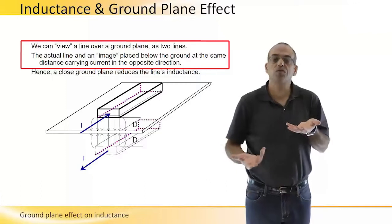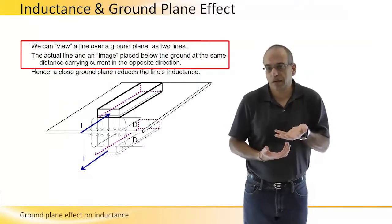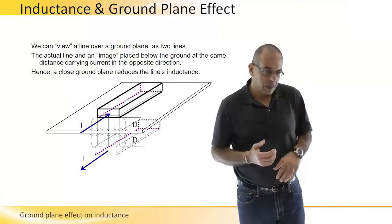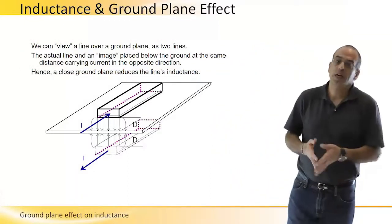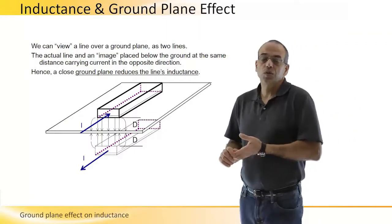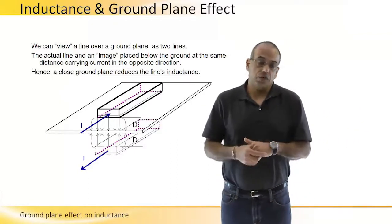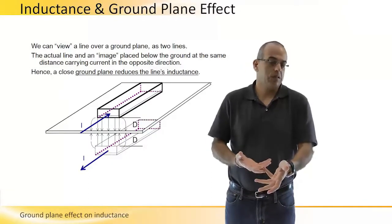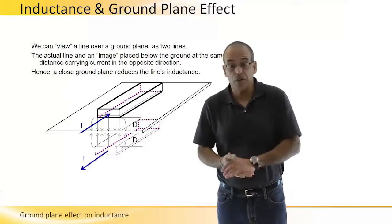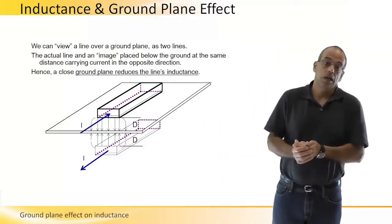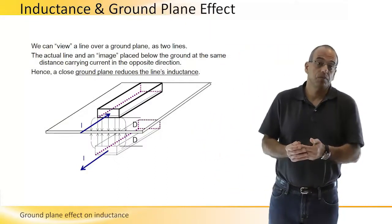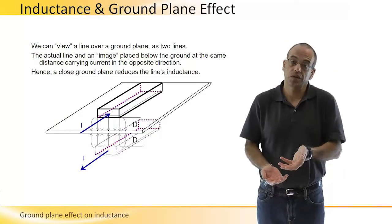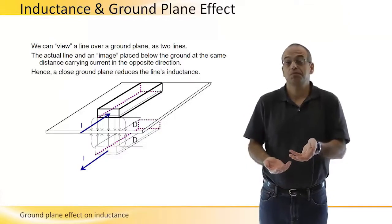This strip carries current in the opposite direction, so this will be an equivalent problem to analyze. What we know is that if this is an equivalent problem and the fields are similar or very close to identical, then the total inductance will be reduced because we know that mutual inductance between two strips carrying current in opposite directions reduces the total inductance.